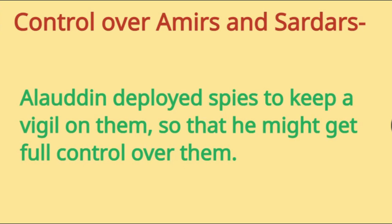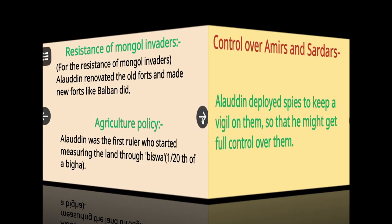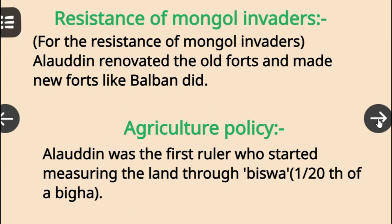For control over Amirs and Sardars, Alauddin deployed spies to keep a vigil on them so that he might maintain full control. For resistance of Mongol invaders, Alauddin renovated old forts and built new forts, as Balban had done before.